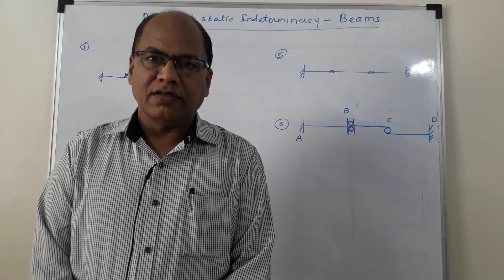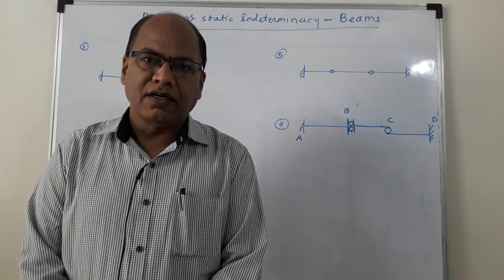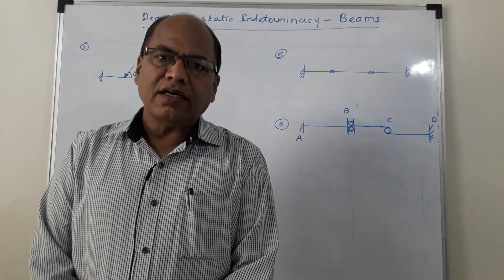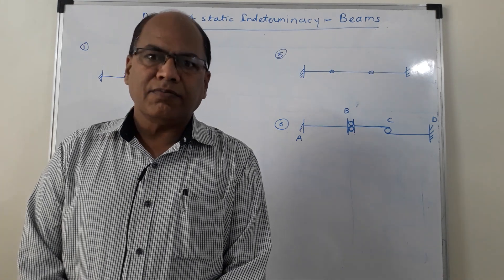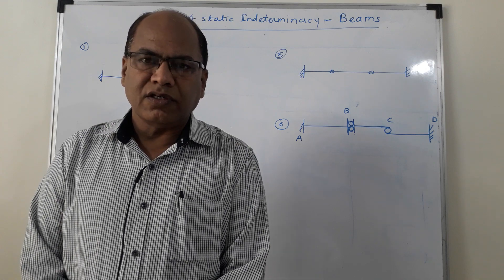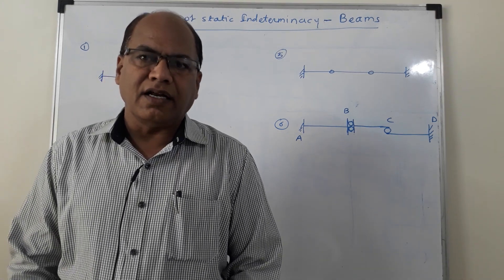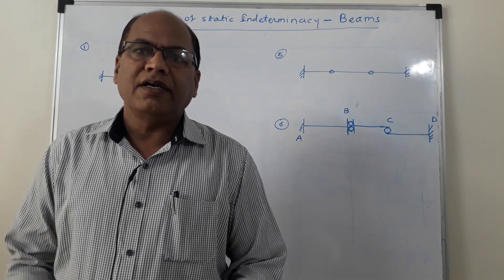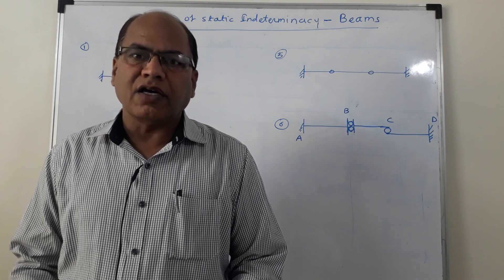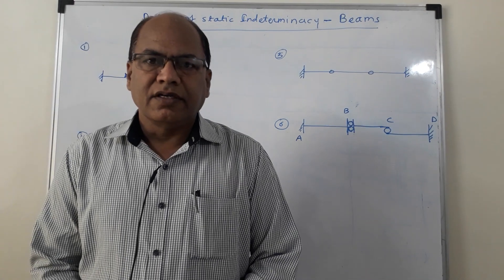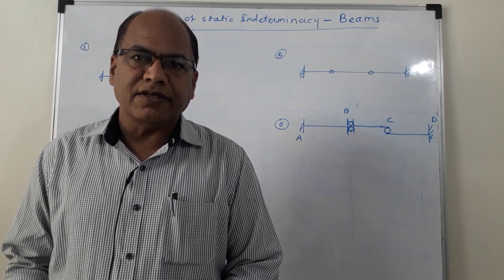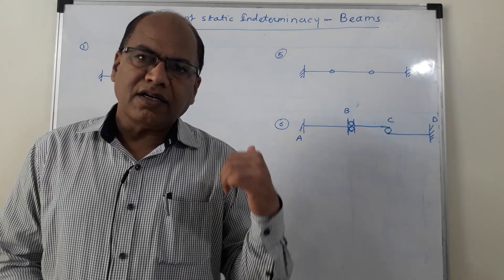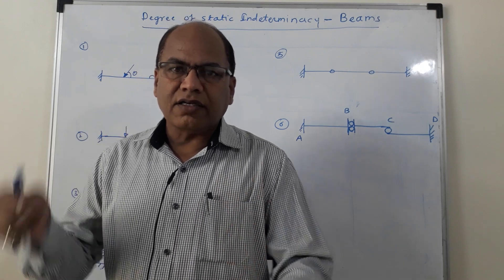As we know, a beam is a horizontal structural member which supports transverse loading. In the previous lecture I did tell you that internal indeterminacy of beams is zero. Because in case of beams, once we get the reactions at the supports, the rest of the beam can be easily analyzed — the internal actions, that is shear force, bending moment, etc., can be easily obtained once the reactions at the supports are known. That is why in case of beams, DSE (degree of external static indeterminacy) is equal to total degree of static indeterminacy, as DSi is zero. So we will be going only for external static indeterminacy in this case.